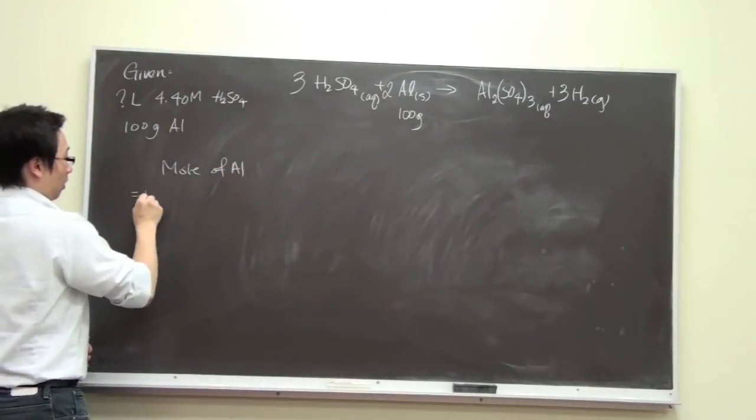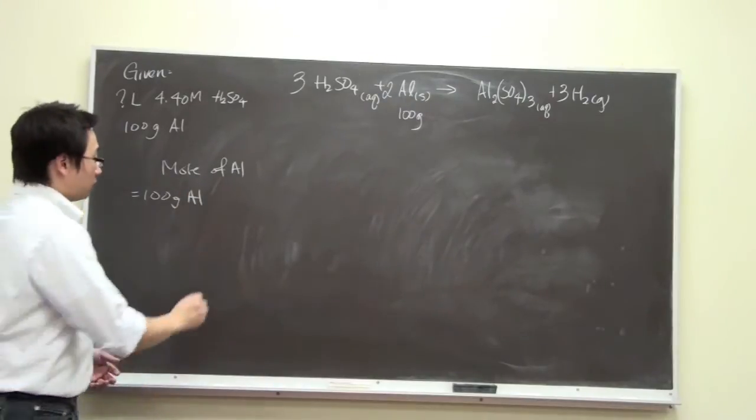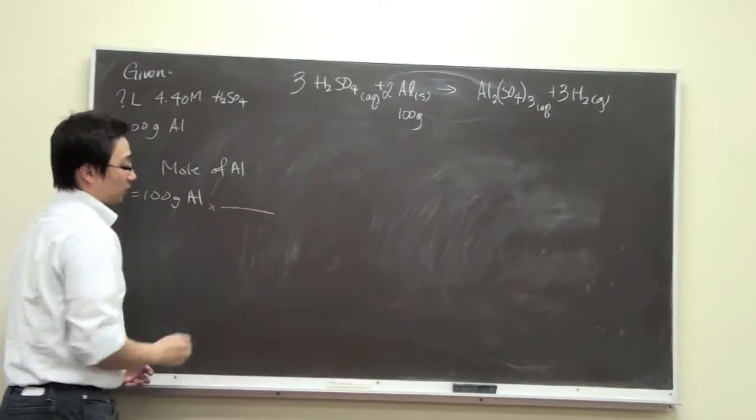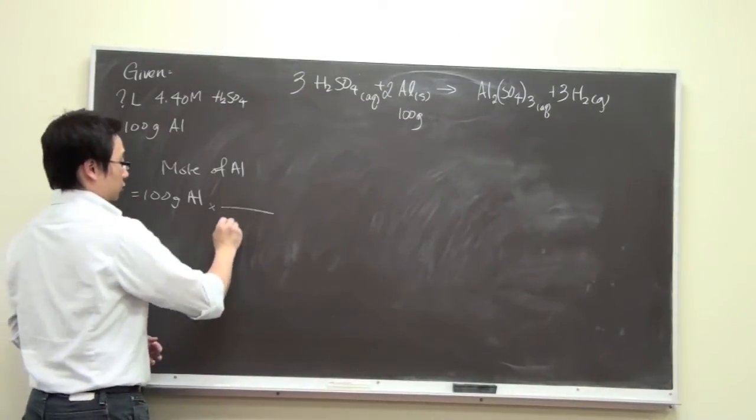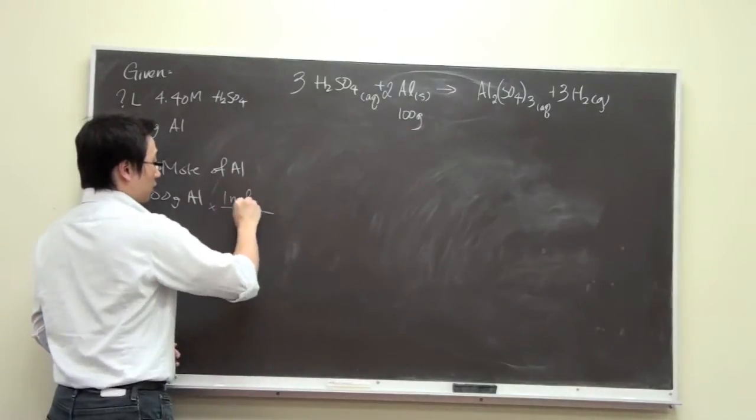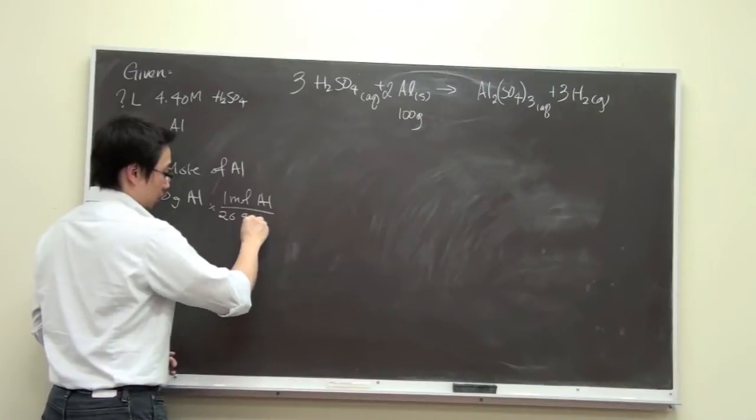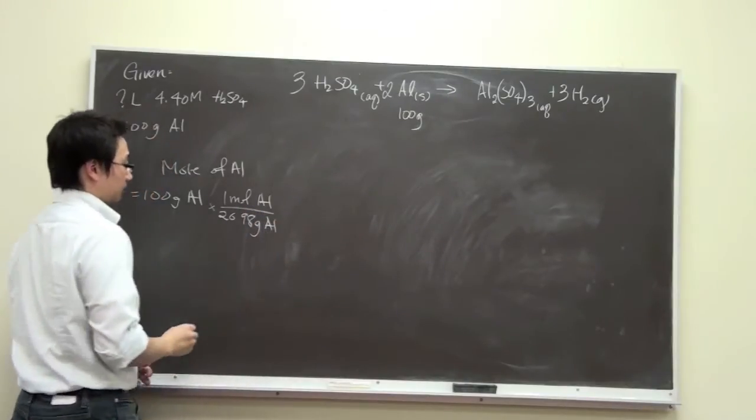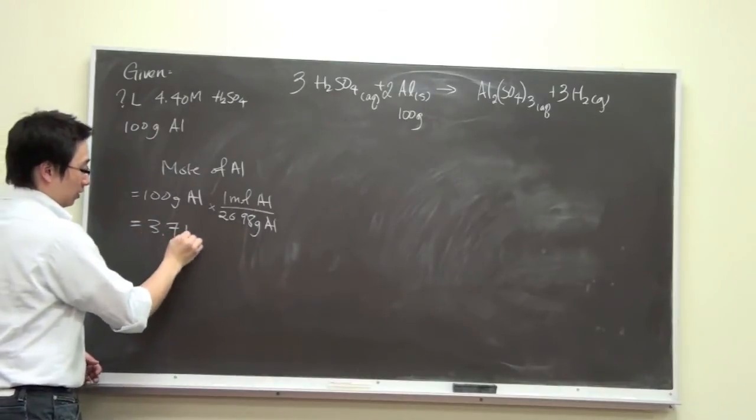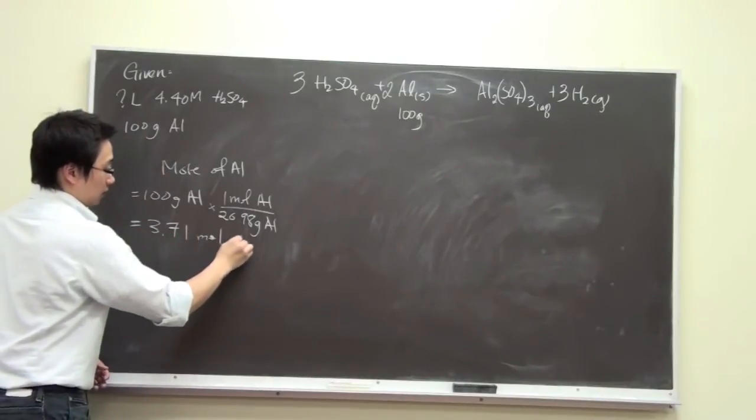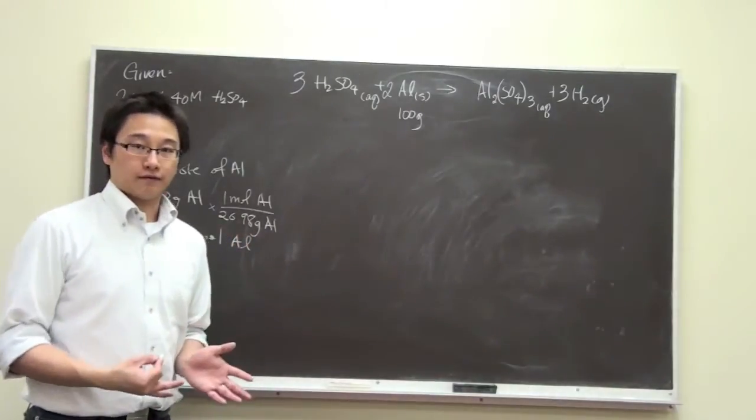We have 100 grams of aluminum. From the periodic table, the molar mass of aluminum is 26.98. So one mole of aluminum over 26.98 grams of aluminum gives us 3.71 moles of aluminum. This is the amount of aluminum we have in terms of mole.